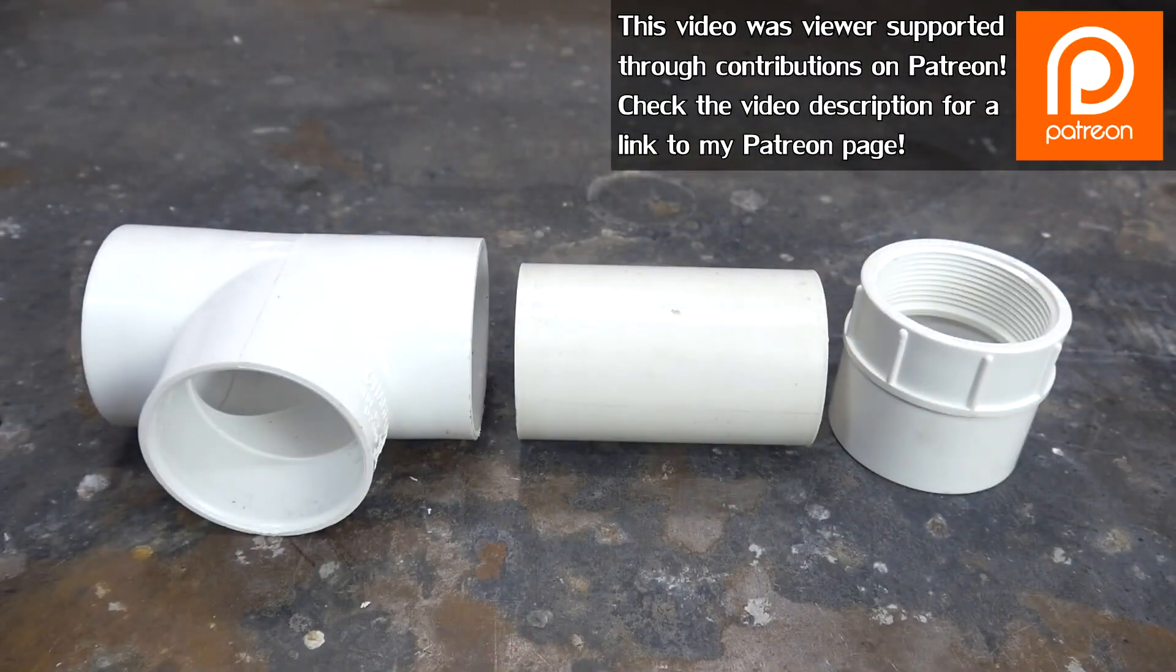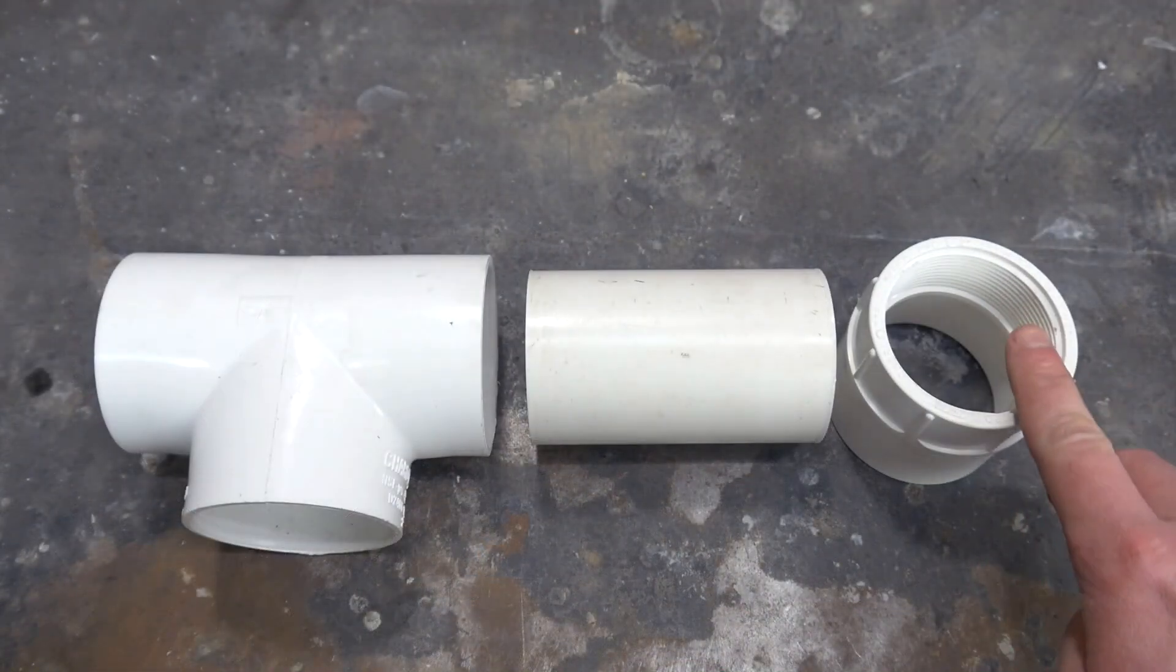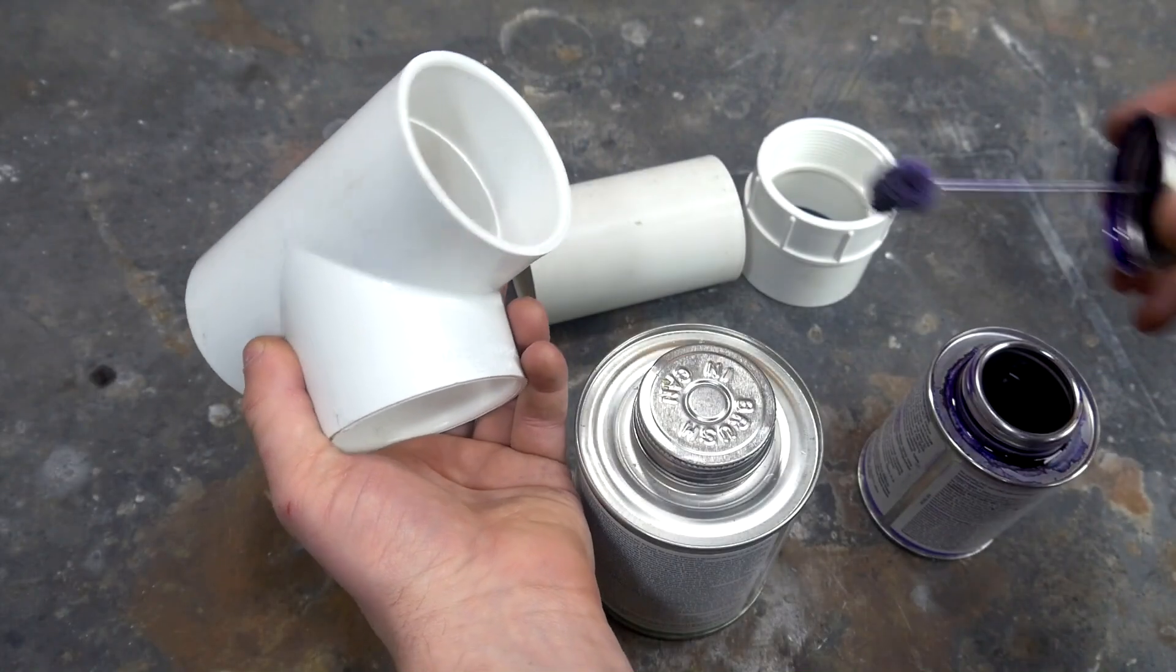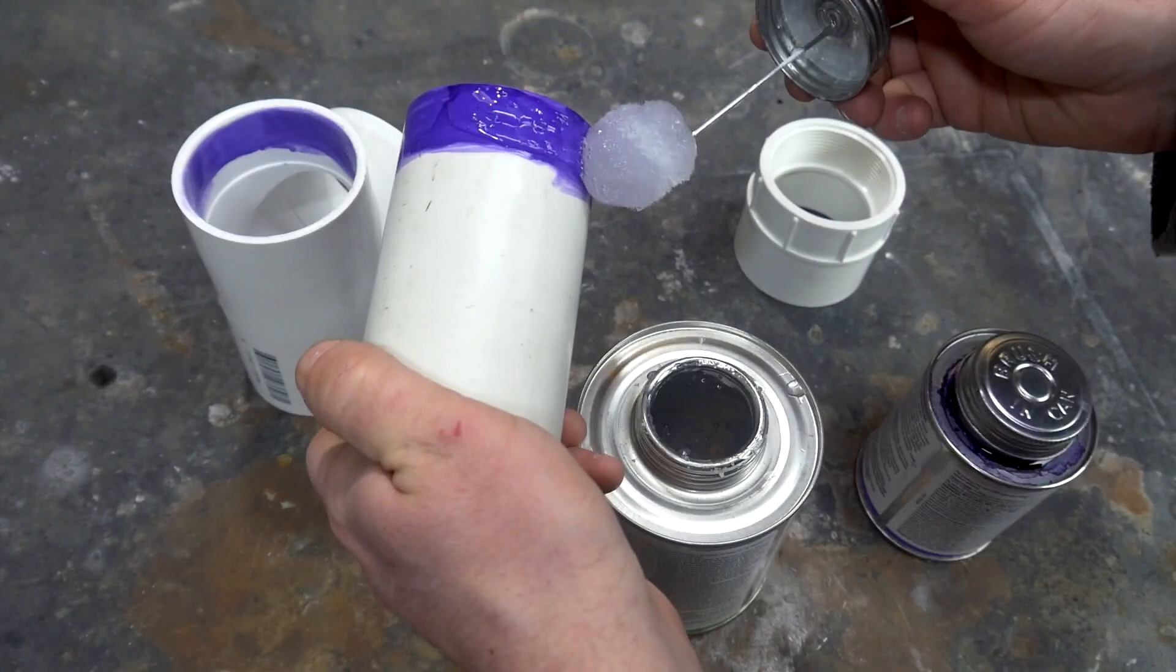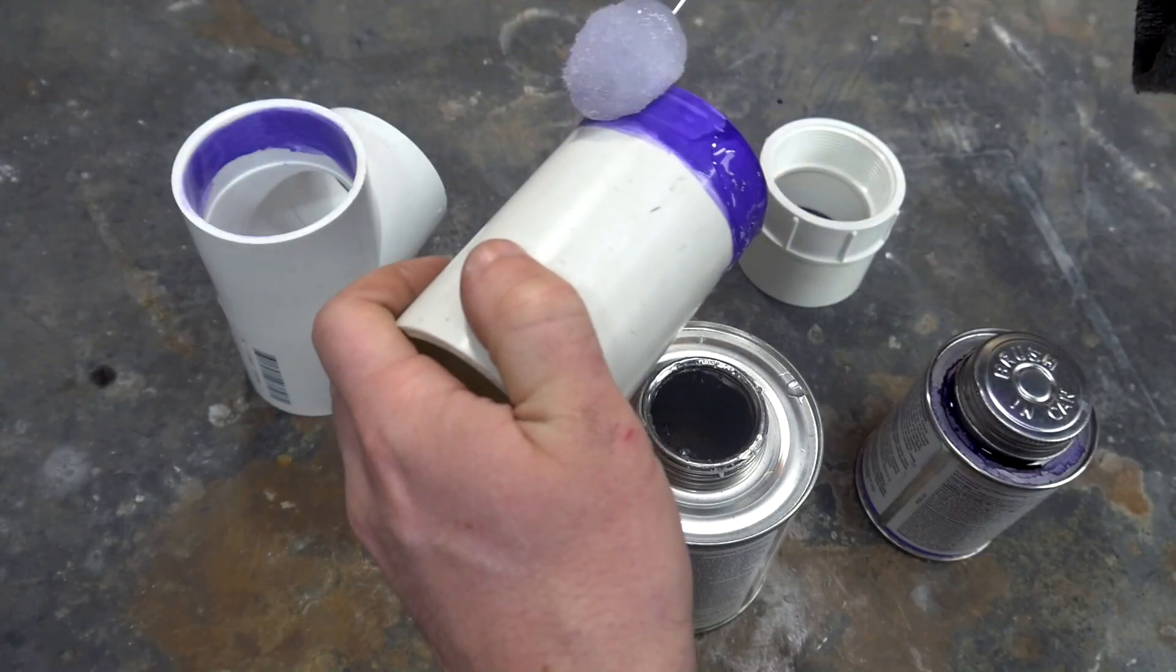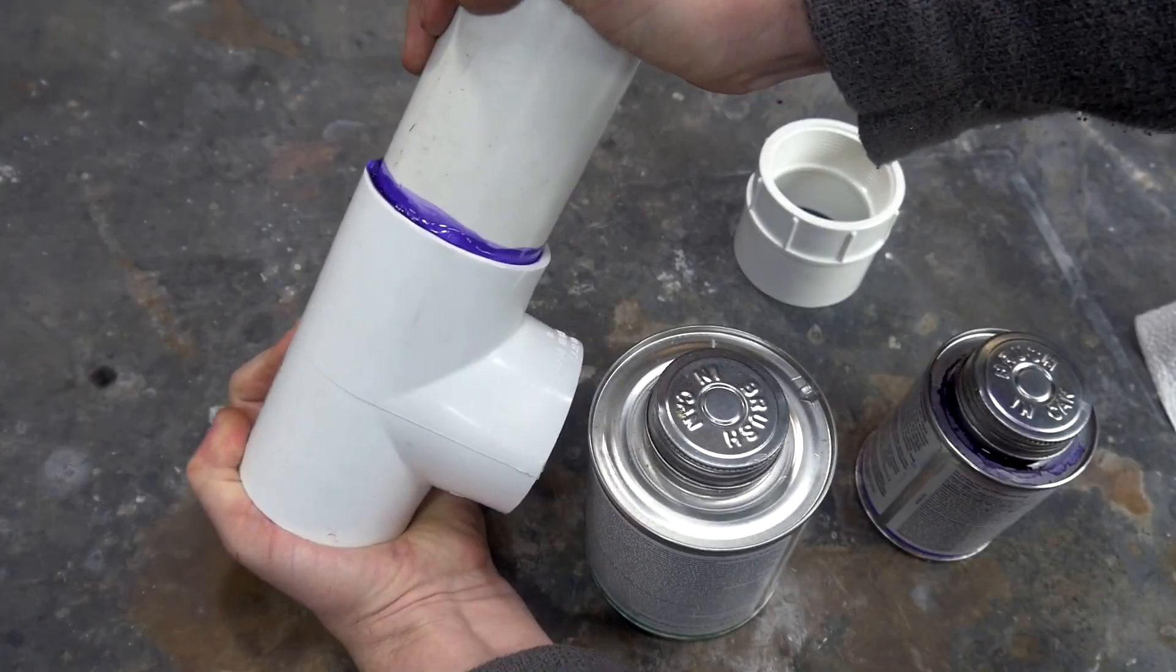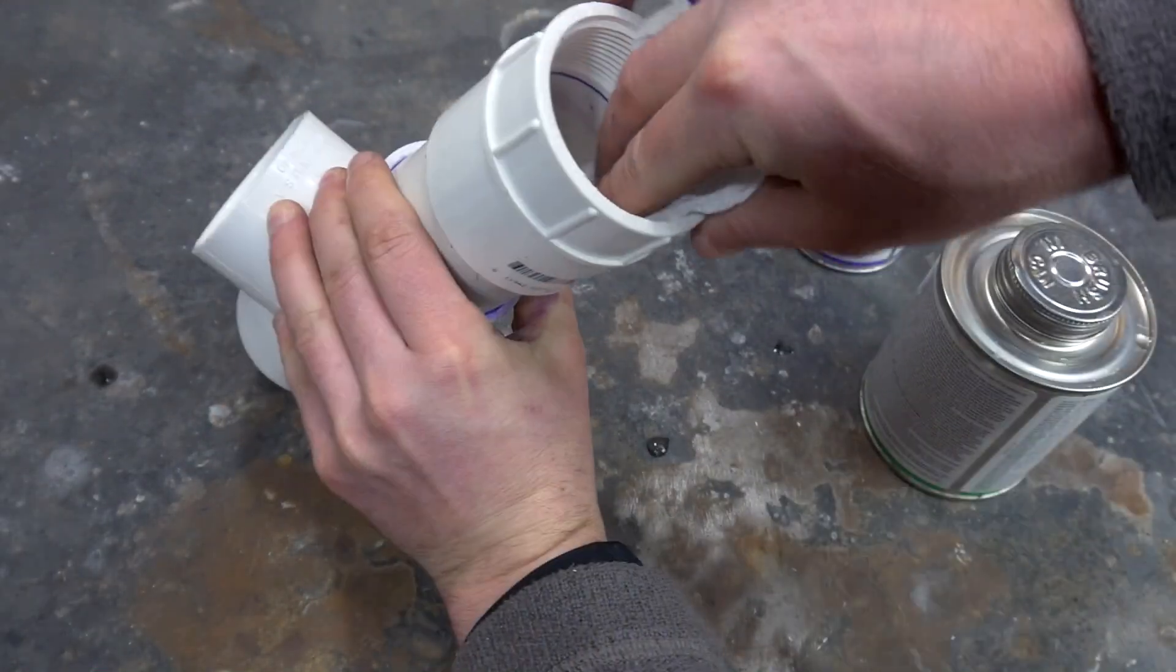The first pieces that go together are a 2-inch T-fitting, a 4-inch long section of 2-inch diameter pipe, and a 2-inch female threaded adapter. To make a strong bond between the pipe and fittings I first apply a coat of PVC primer and then also a generous amount of PVC cement to both surfaces where they will be in contact. The cement dries fast, so immediately after it's been applied, the two pieces must be pressed firmly together.